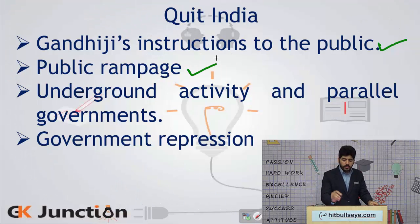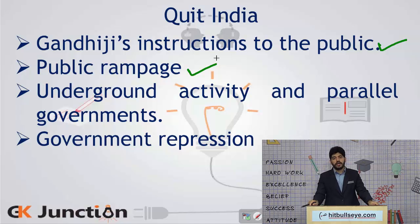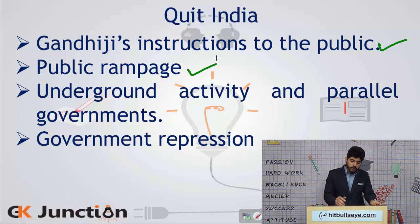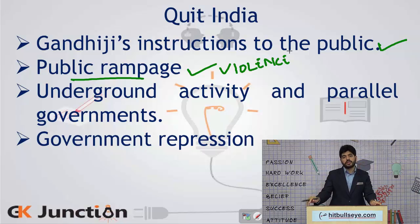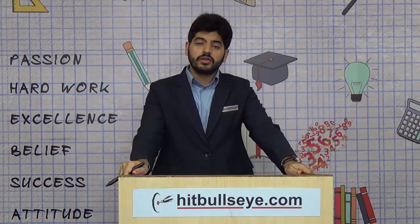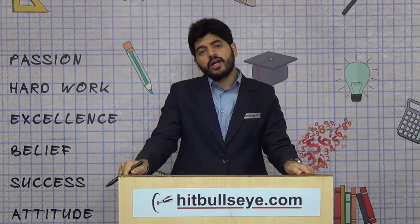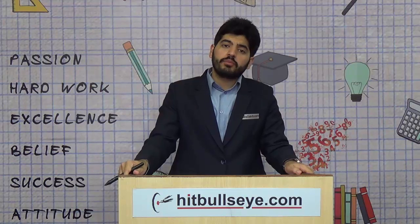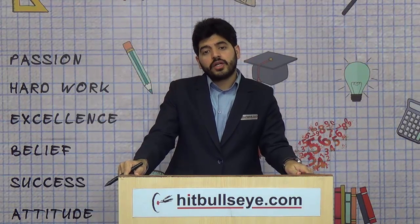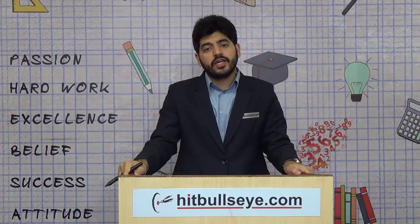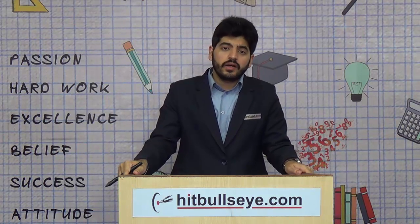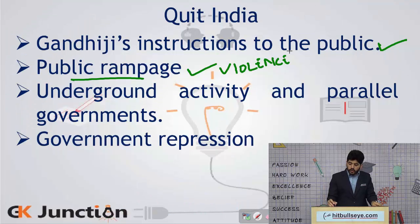The second major event was public rampage. In the Quit India Movement, public rampage was to a very high extent, showing some degree of violence that was tolerated by Gandhiji — who was otherwise very intolerant of violence throughout history. The general public indulged in looting British godowns, cutting telegraph lines, destroying railway lines, and disrupting other means of communication.